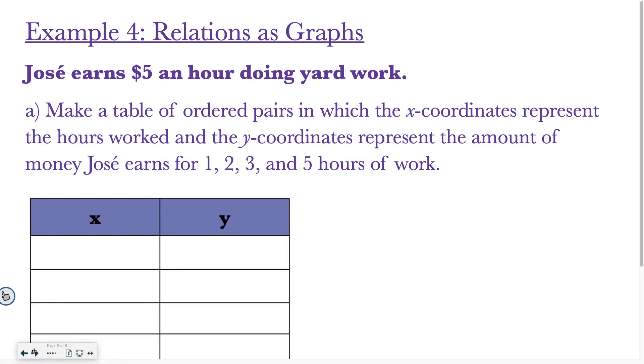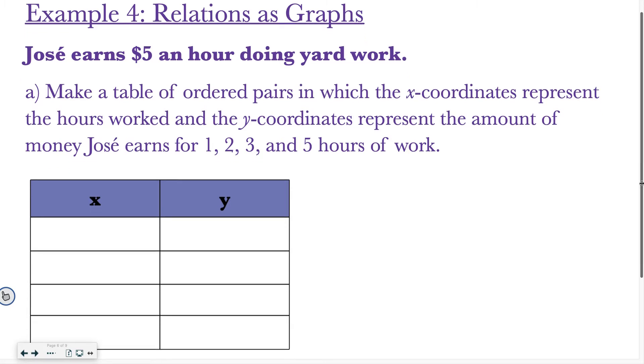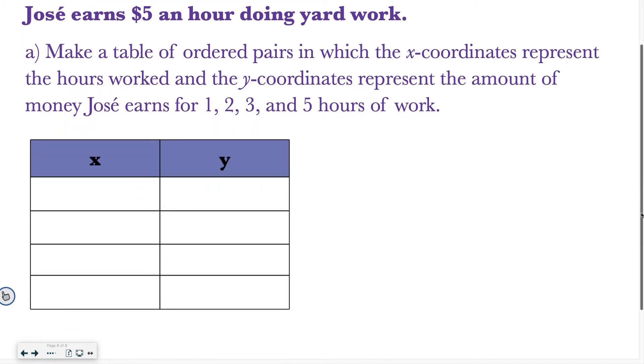All right. Example 4, relations as graphs. So what we're going to start with is we're going to take Jose earns $5 an hour doing yard work. We're going to make a table with that information. Then we're going to convert the table to a graph. So make a table of ordered pairs in which the x-coordinates represent the hours worked, and the y-coordinates represent the amount of money Jose earns for 1, 2, 3, and 5 hours of work.